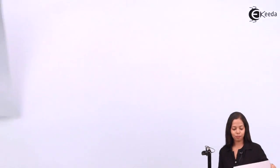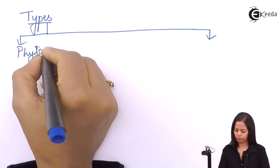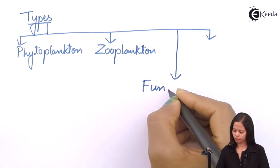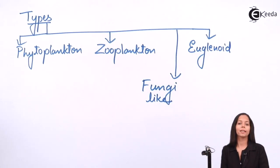Now we are going to study the types of protista. There are four major types. The four categories of protista are phytoplanktons, also called plant-like protists; zooplanktons, also called animal-like protists; fungi-like protists; and euglenoids. We are going to study each in detail.